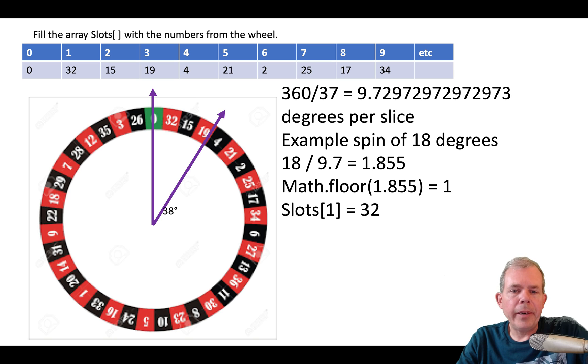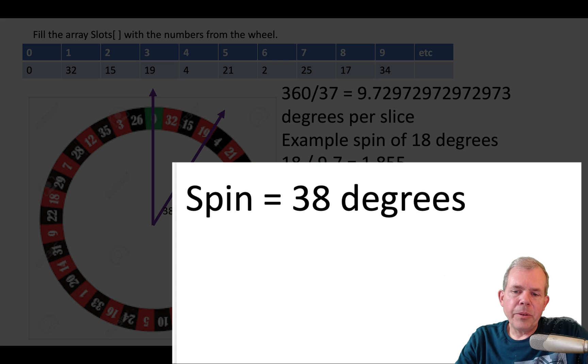What value did it stop on? Well, it kind of looks like it stopped on the red 19, but are we sure? Well, let's do the math and find out. So the spin is 38 degrees. We know that 38 divided by 9.7 gives us 3.91.